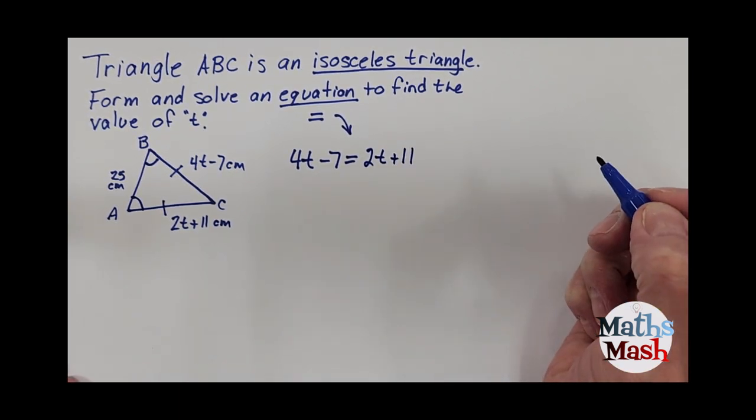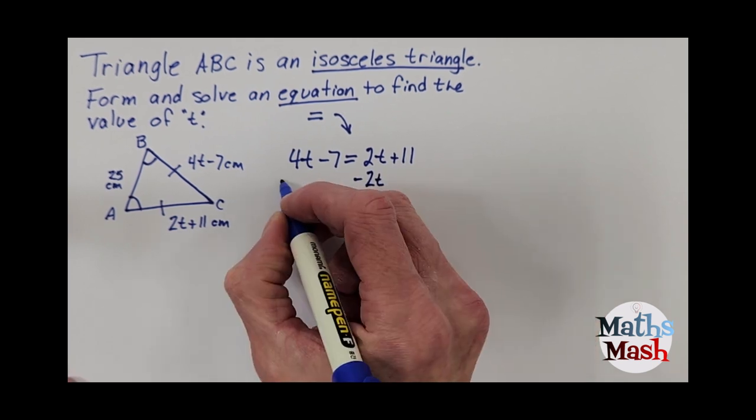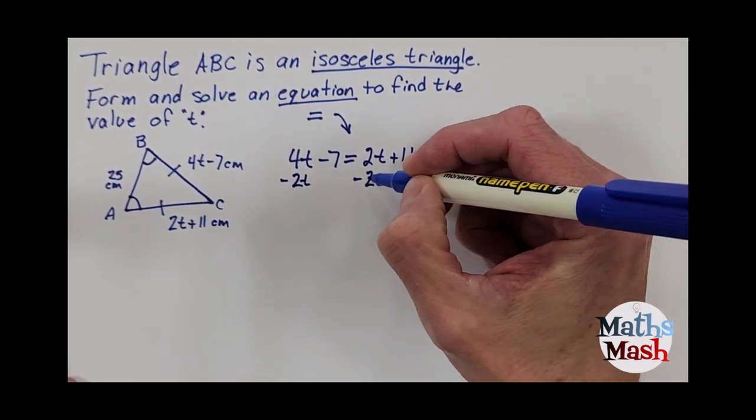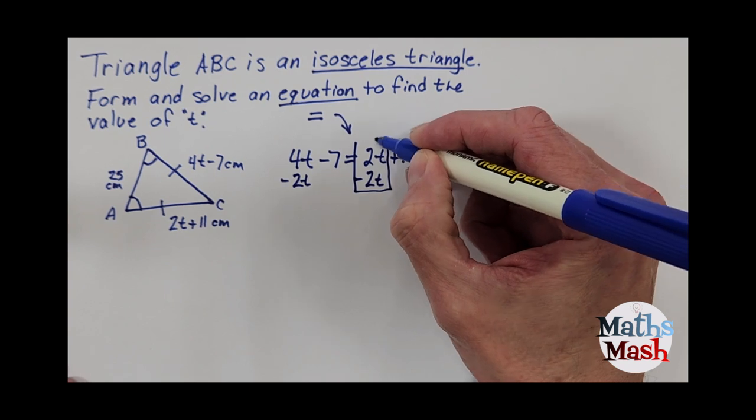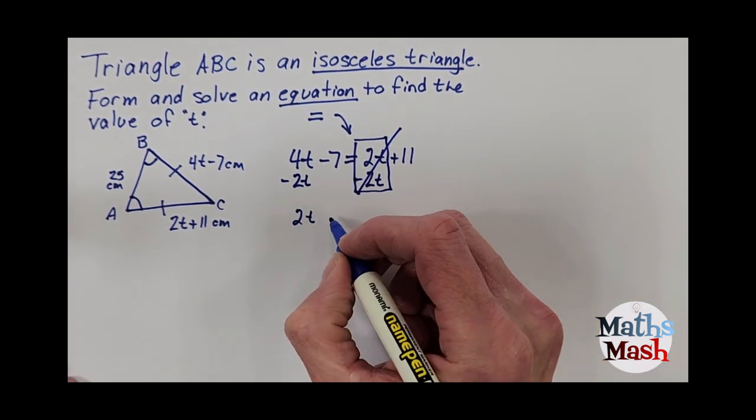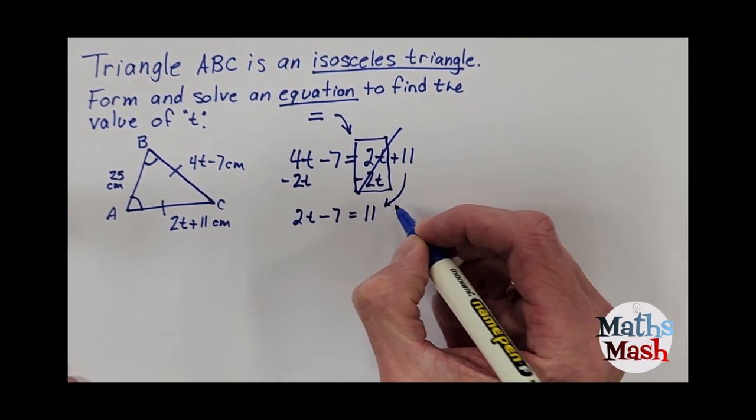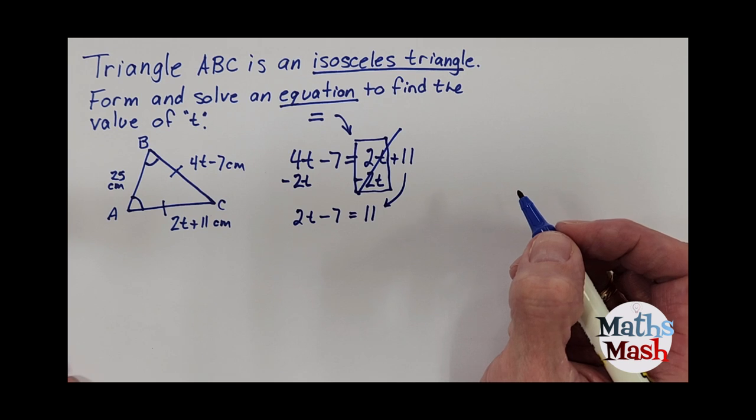Okay, so now I'm going to take this 2t away from here and from the other side, those two 2t's cancel each other out. So that leaves me with 2t on the left side minus 7 equals 11 and I'm just bringing that 11 down like that.